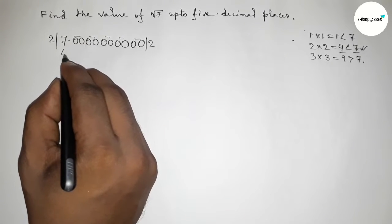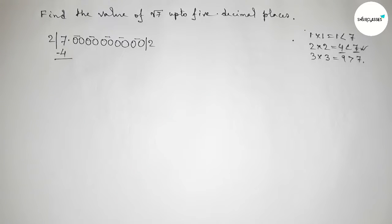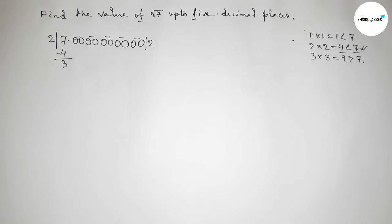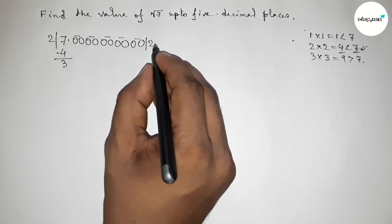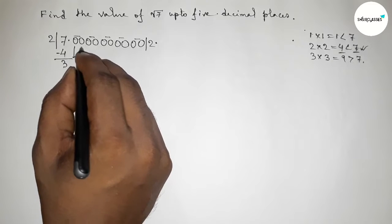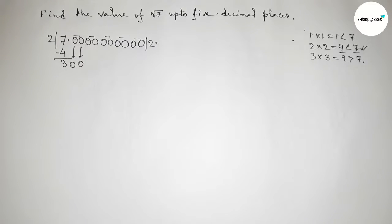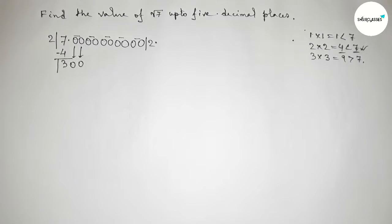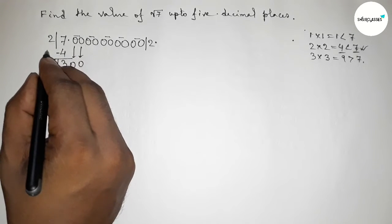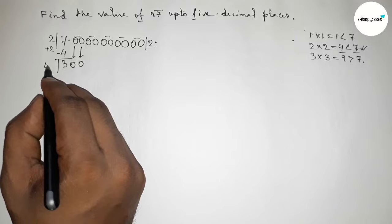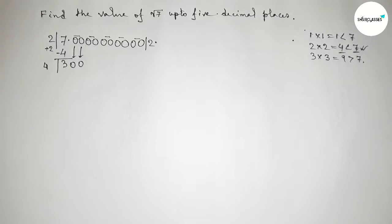So 2 times 2 equals 4, which is almost near and less than 7. Subtracting: 7 minus 4 equals 3. Now the point will be placed here. Bring down the first pair of zeros. Drawing a division line. The number used was 2, so we add 2 plus 2 equals 4.